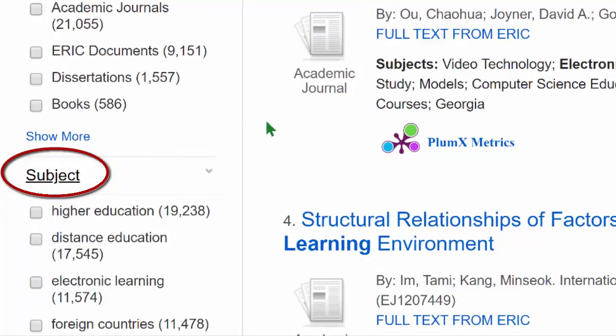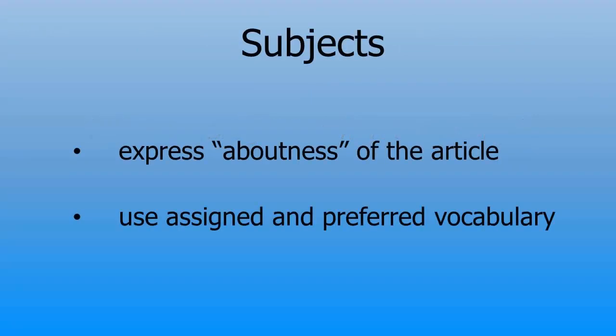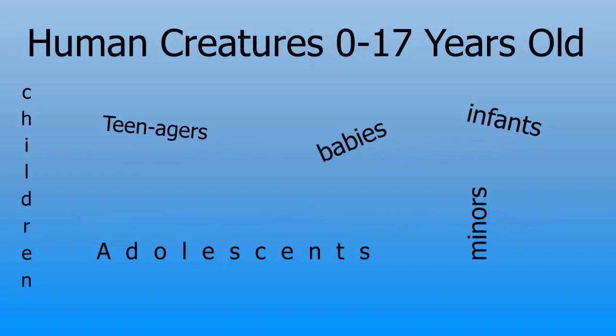What are subjects? Subjects are two things. First, they express the aboutness of the article, rather than simply a word or phrase that appears in the record — the subject expresses what the article is really about. In addition, subjects express the preferred vocabulary of the database. For example, what is the word for those human creatures that are below 18 years old?